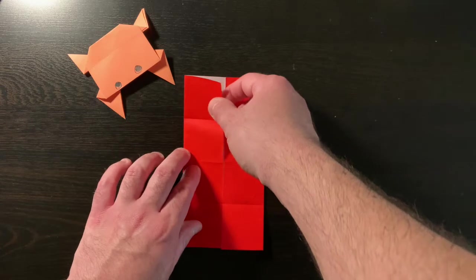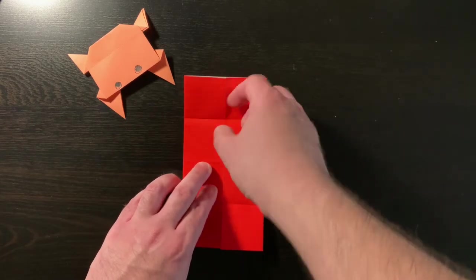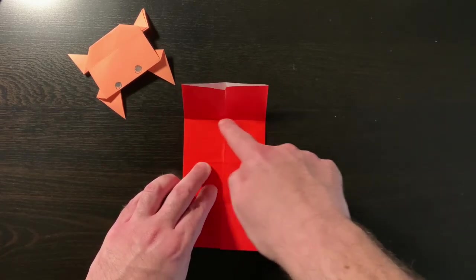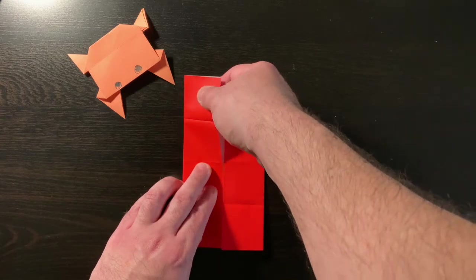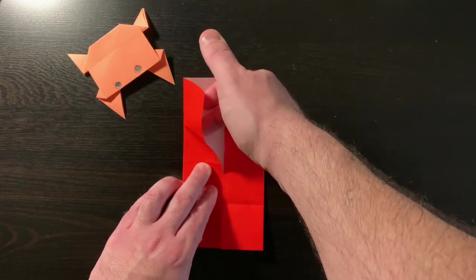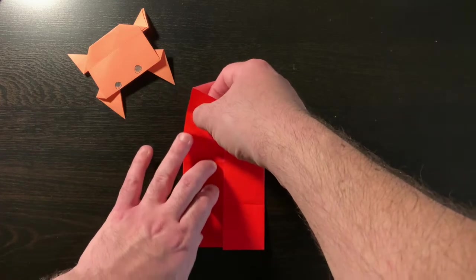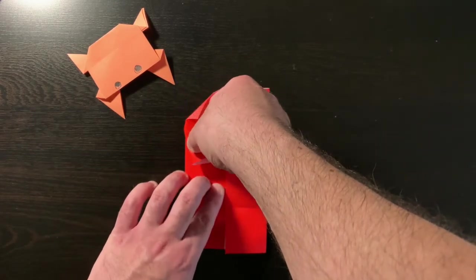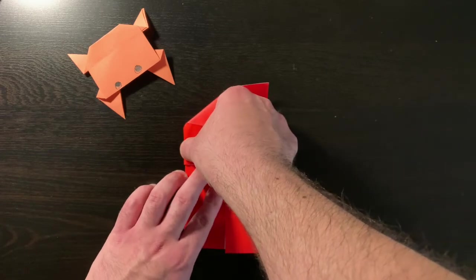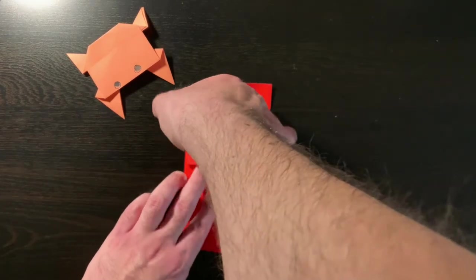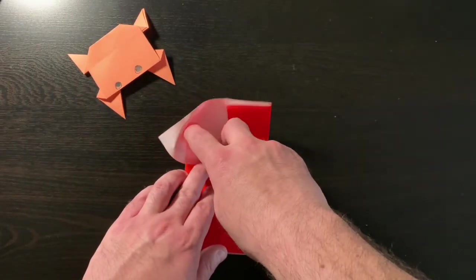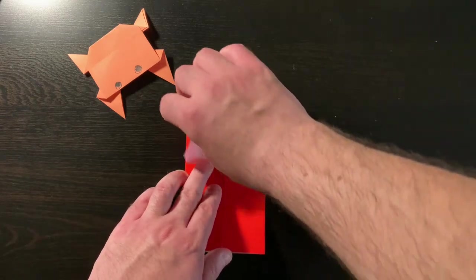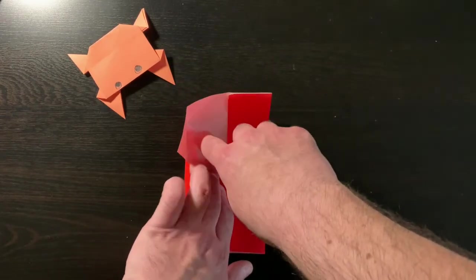So we're going to take this flap. We're going to make this crease line here meet the edge here. To do that, we're going to open up our little pocket and just be gentle, making sure we make that meet. Keep that flap up, because now we need to do that on the other side as well.